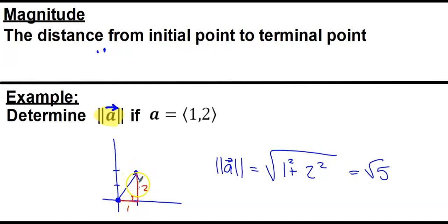If I draw in the rise and the run, I have a right triangle. All I have to do to figure out the magnitude of a is find the hypotenuse of this right triangle. The magnitude of a equals the hypotenuse length. So a squared plus b squared equals c squared, and I take the square root to solve for c.